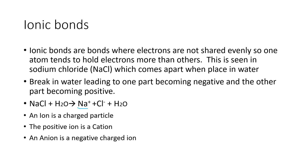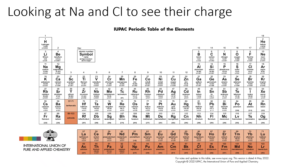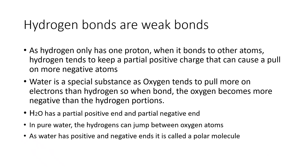An ion is a charged particle — positive ions are cations, and negative ions are anions. Looking at sodium and chloride on the periodic table: sodium is in the column that tends to have a +1 charge, and chloride is in the column that gives a -1 charge. That's why sodium chloride dissociates in water with both having a charge.